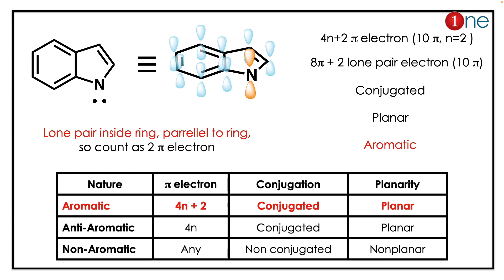So you have to count an additional two pi electrons from the lone pair. If you count it, it's 4n plus two pi electrons — eight from the pi electrons and two from the lone pair — so totally ten pi electrons.